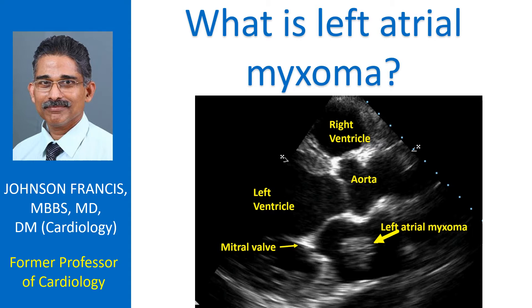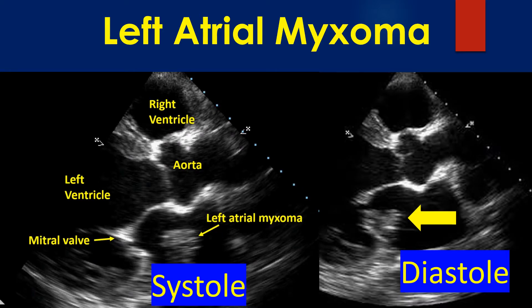A myxoma in the left upper chamber of the heart is called left atrial myxoma. Echocardiogram can demonstrate left atrial myxoma very well. Left atrial myxoma is seen on echocardiogram as a mass, moving towards the left ventricle from the left atrium in diastole.